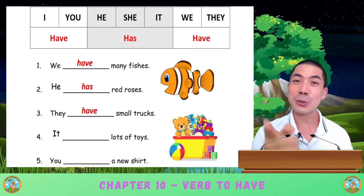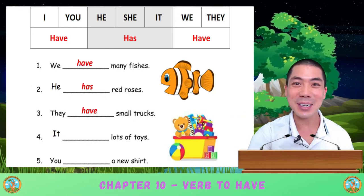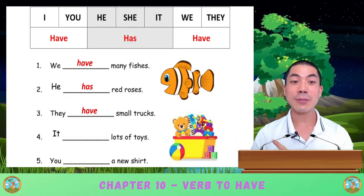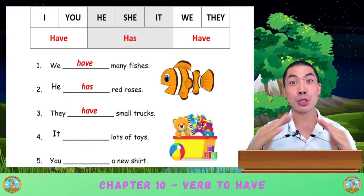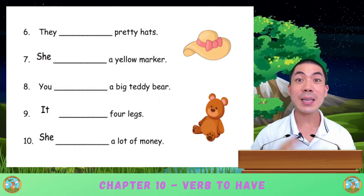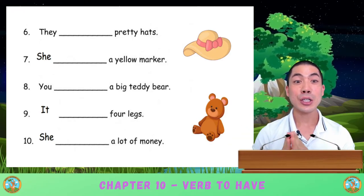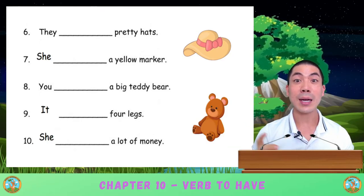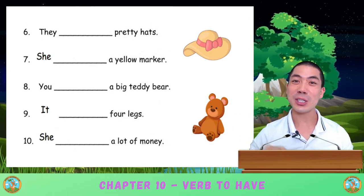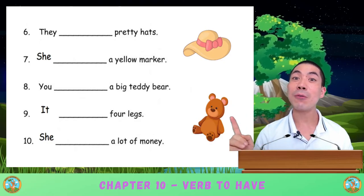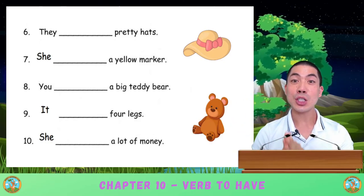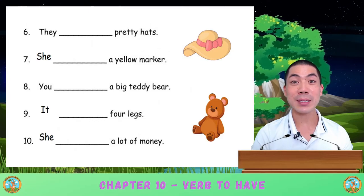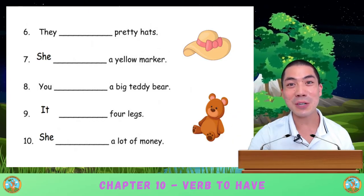I will read all the sentences for you, but you must do the hard part and fill in the blanks. Are you ready? The fourth sentence: 'It blank lots of toys.' Number five: 'You blank a new shirt.' Number six: 'They blank pretty hats.' Seven: 'She blank a yellow marker.' Eight: 'You blank a big teddy bear.' Question nine: 'It blank four legs.' The final question, question ten: 'She blank a lot of money.' Take some time to do this worksheet and try your best to fill in all the blanks, and when you're ready, I'll see you in the next worksheet for some more practice.